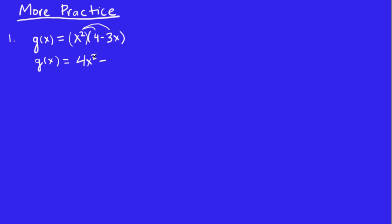So x² times 4 is 4x². x² times negative 3x is minus 3x³. And now it's in a good shape because it's a difference of two functions. Each of those functions is a constant times a power.